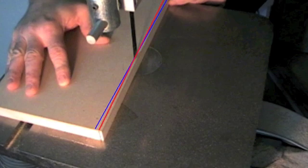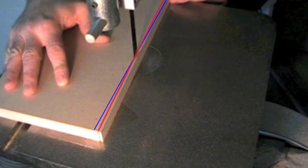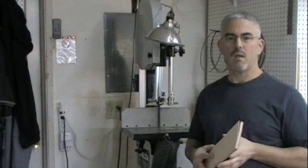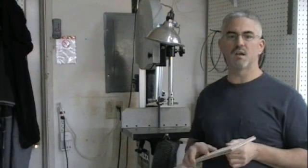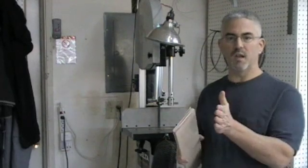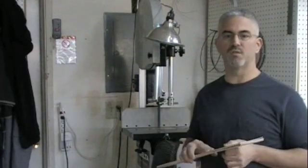Here you can see the blue line is parallel to the miter slot while the red line indicates the actual direction of the cut. Now the good news is that it's easy to compensate for bandsaw blade drift. It's a simple matter of adjusting the angle on the fence to match the drift of the bandsaw blade.